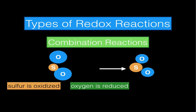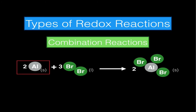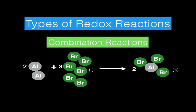So sulfur is oxidized — it loses electrons — while oxygen is reduced — it gains electrons. Let's take a look at another example. Here's a general equation once again: a single element combining with another single element to make a brand new compound. In this case, my single element will be aluminum, and over here will be bromide. Aluminum and bromide will combine to make aluminum bromide, a brand new compound.